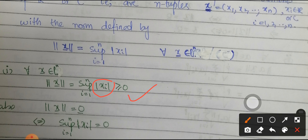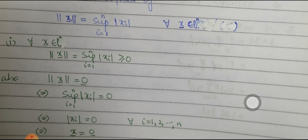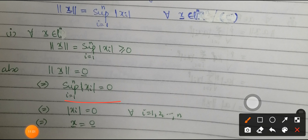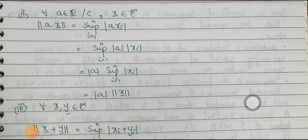For condition 1, ‖x‖ = sup_{i=1}^{n} |xᵢ| ≥ 0 since each |xᵢ| ≥ 0, so the supremum is non-negative. For condition 1b, if ‖x‖ = 0 then sup |xᵢ| = 0, which means each |xᵢ| = 0 (since all terms are non-negative and their supremum is 0). Therefore each xᵢ = 0, so x = 0. Condition 1 is proved.